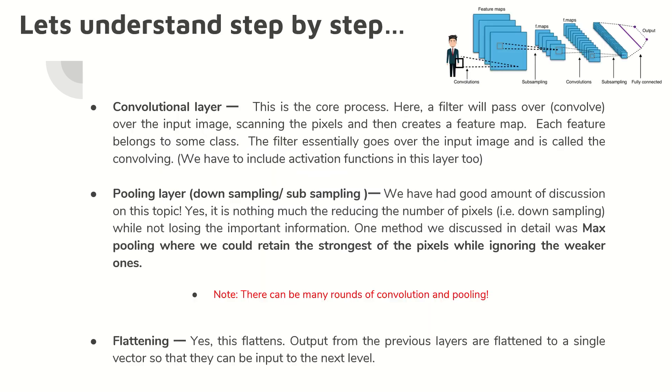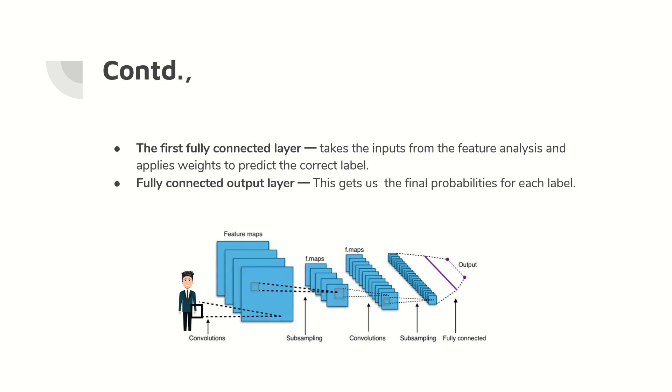We have five layers. The first layer is the convolution layer. The second layer is the pooling layer. The third layer, we flatten it. The fourth layer is the first fully connected layer. And the last is the output layer.